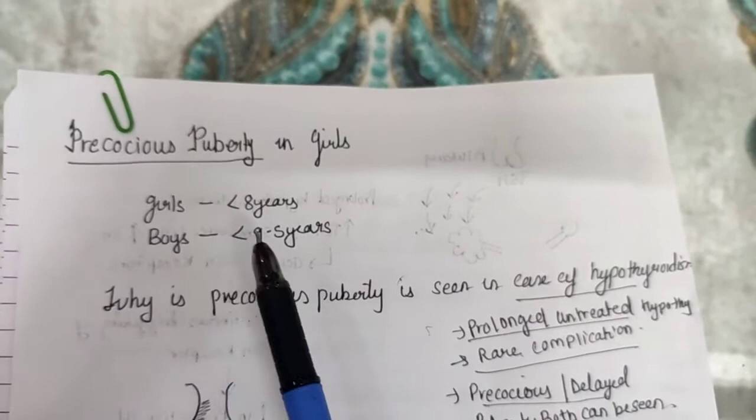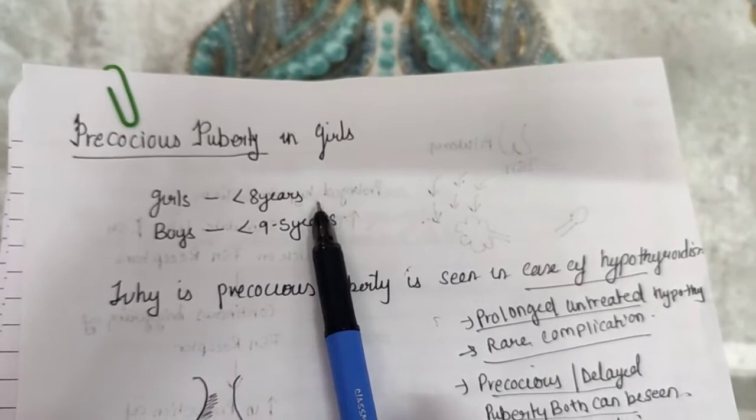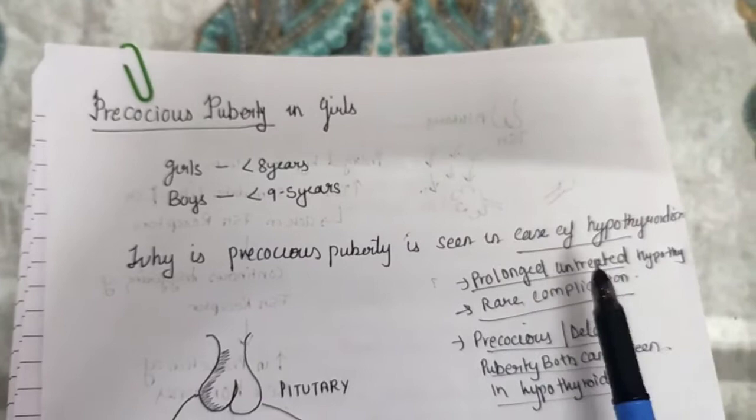We know what is precocious puberty. Precocious puberty is when you see secondary sexual characters in girls in less than 8 years and in boys less than 9 and a half years.